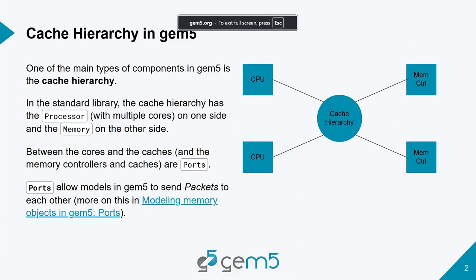One of the main types of components in gem5 is the cache hierarchy. The cache hierarchy sits between the CPUs and the memory, and its job is to make sure all the CPUs have coherent access to memory.